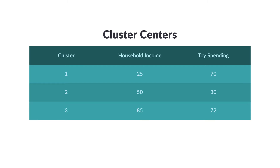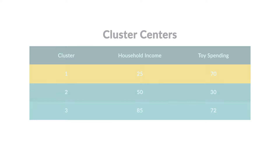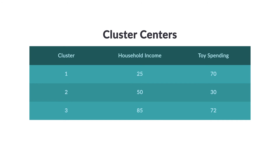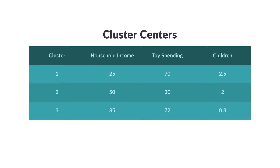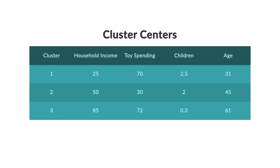We could put all this information together in a table. Cluster one has an average household income of 25 and an average toy spending of 70. What do you do with the data once you have your clusters? For each cluster, you can run other analyses. In our toy purchase data set, you might run a query to figure out how many children were in each household or the average age of the household. We see that cluster one has an average of 2.5 children in the household and an average age of 31. That doesn't mean everybody in that cluster is 31 years old — but on average, they are.